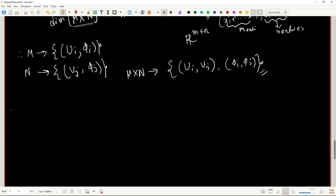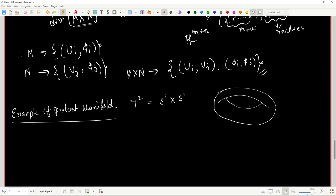One example of a product manifold is the torus, the two-torus that can be written as S1 Cartesian product with S1. In our 3D space, we usually draw a torus like this that looks like a donut. But in reality, this torus has to be embedded in R4 where it looks flat.